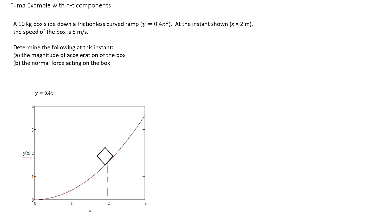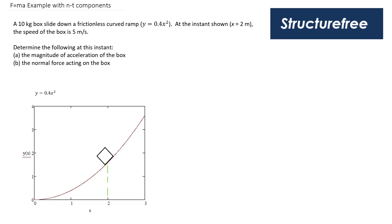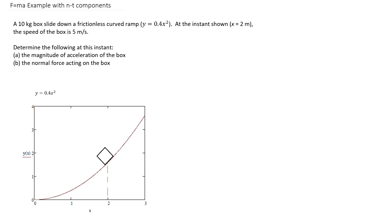Welcome back to Structure-Free Learning! In this video, we're going to do an example problem using F equals MA with normal and tangential components. I made this really official — I even typed up the problem statement and drew a graph using MathCad. We have a box that weighs 10 kilograms, which is about 20 pounds, and it's sliding down a frictionless curved ramp. That ramp has a path described by y equal to 0.4x squared, with units outputting in meters.